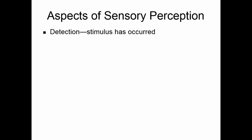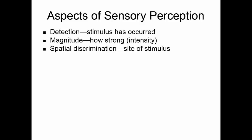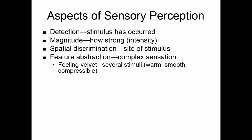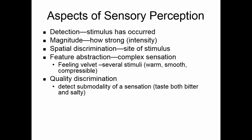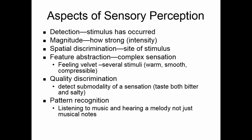There are several aspects of sensory perception. First, you have to detect it — you have to know that a stimulus has occurred. You have to determine how strong the stimulus is: what is its intensity, the magnitude of the stimulus. Spatial discrimination allows you to tell where the stimulus is coming from — that is part of the somatosensory mapping on the somatosensory cortex. Feature abstraction involves very complex sensations; for example, if you feel velvet, you get several stimuli — it's warm, smooth, soft, and compressible — all going into your overall perception. Quality discrimination helps you detect submodalities, like tasting bitter and salty simultaneously. And pattern recognition means when you listen to music, you hear words and melody, not just individual musical notes.